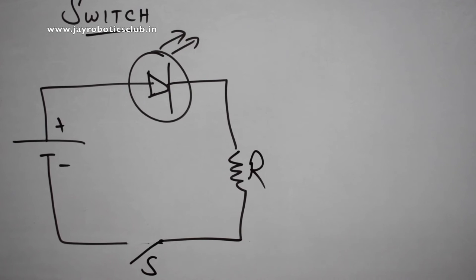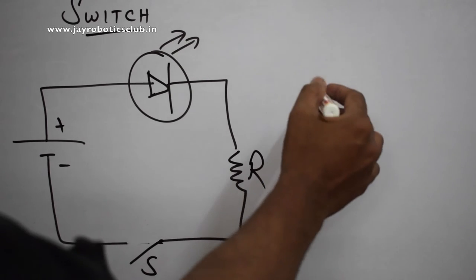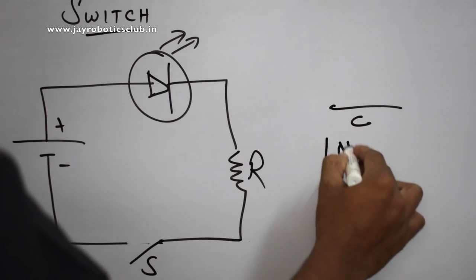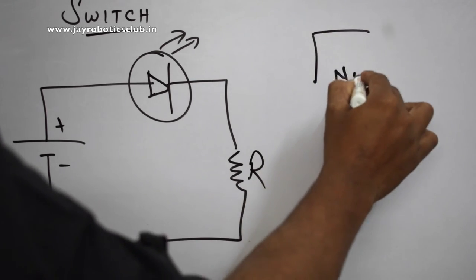We have one more kind of switch. For example, C, common terminal, normally closed, normally open one.